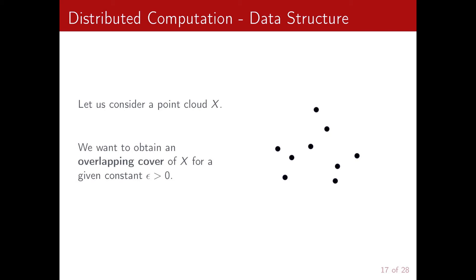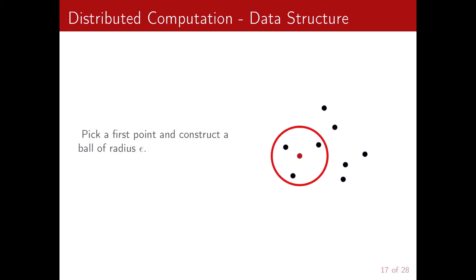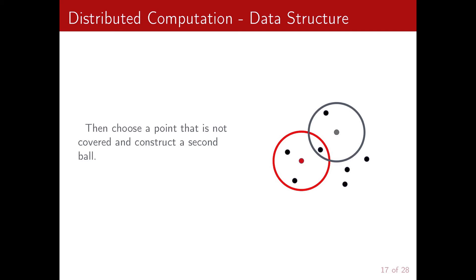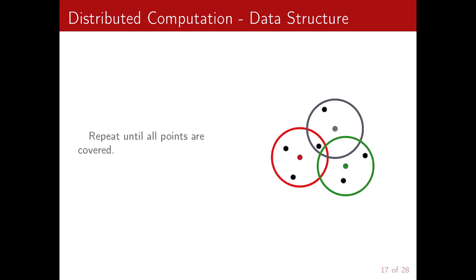So how we do that, we start by building an overlapping cover of our input cloud. We first pick a point and we construct a ball of radius epsilon centered on it. And we flag all the other points that are inside it. Then we choose a point that is not covered and create a second ball. And we keep on repeating the process till all the points are covered by at least one ball.